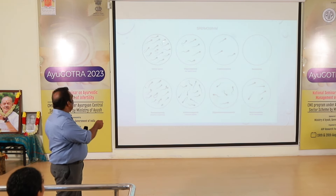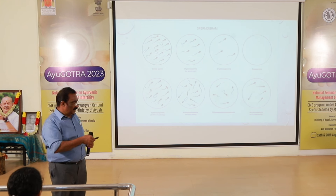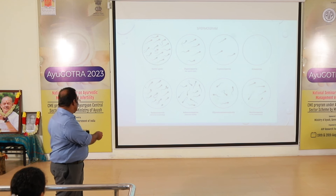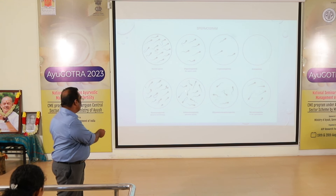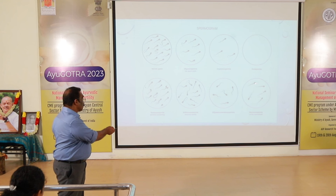In a spermogram: normal sperm, then oligospermia, then cryptospermia with very few numbers, then azoospermia with no spermatozoa in the ejaculate, then teratospermia with irregular shapes such as double heads, then asthenospermia with abnormal movements versus normal straight movement, then oligospermia with total abnormality, and necrospermia with only dead spermatozoa.